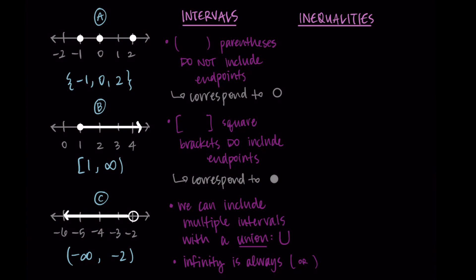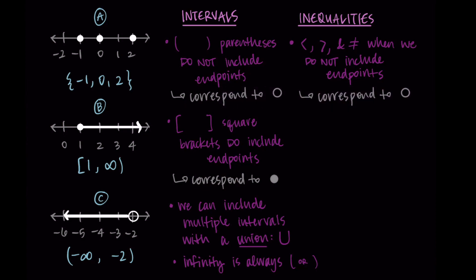Let's repeat this process with inequalities. Everything we had for intervals has a corresponding part for inequalities. I like to think of inequality as being not just equals — an inequality will have symbols other than just an equal sign. So if we're writing an inequality and we want to not include the endpoints, we're going to use the less than, greater than, or not equal to sign. We would use these symbols when we're using an open circle — when we're not including a point.